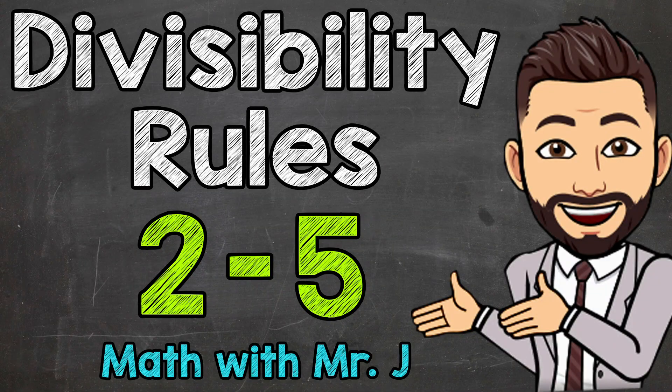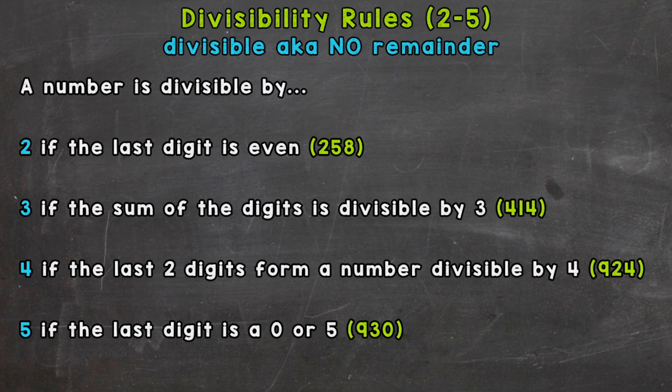Welcome to Math with Mr. J. In this video, I'm going to cover the divisibility rules for numbers 2, 3, 4, and 5. Being divisible by a number means you can divide by that number and not end up with a remainder.